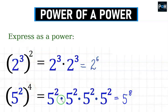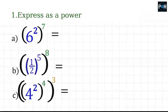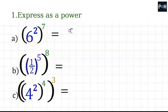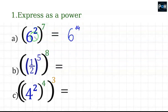In the first task, we are instructed to express this as a power. According to what we discussed, in the first example the base is 6. What do we have to do with the exponents? We have to multiply them. 2 times 7 gives us 14, so the result is 6 to the power of 14.